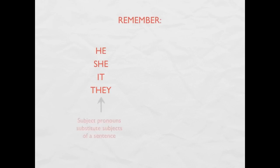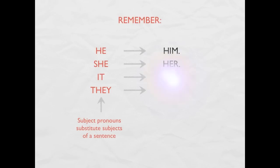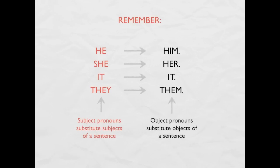Remember, we have the subject pronouns: he, she, it, and they. They are subject pronouns — they substitute subjects of a sentence. For each subject pronoun there is a corresponding object pronoun: he / him, she / her, it / it, they / them. These are object pronouns because they substitute objects of a sentence.